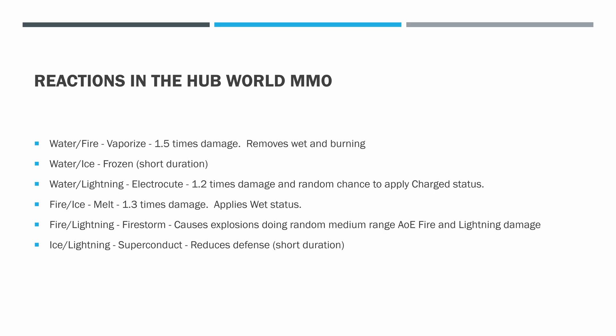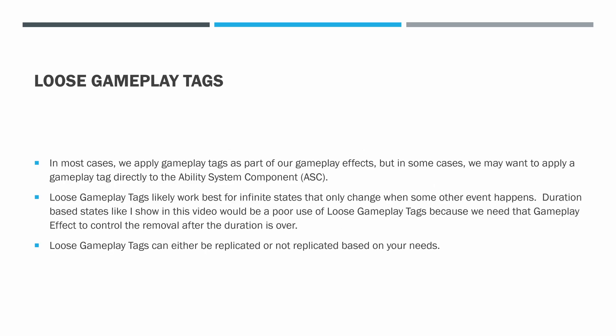Water or ice — doesn't matter the order — will apply Frozen, a short duration with no movement at all. Water and Lightning will apply Electrocute, which is 1.2 times damage and a random chance to apply a Charge status. Fire and Ice combine to Melt — that's the one we're actually working on today — it's 1.3 times damage and applies the Wet status. Fire and Lightning create Firestorm, causing explosions doing random medium-range AOE fire and lightning damage. Ice and Lightning is Superconduct, which reduces defense for a short duration.